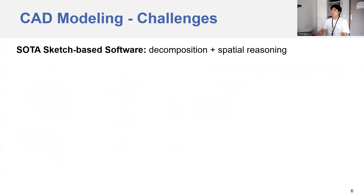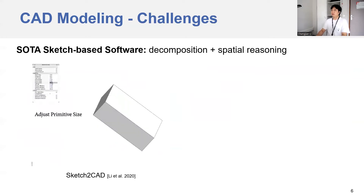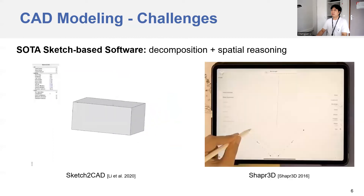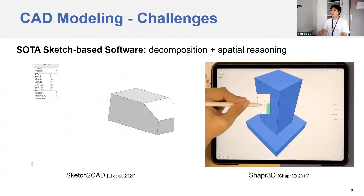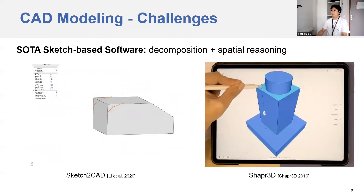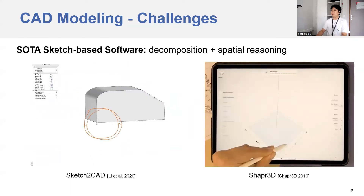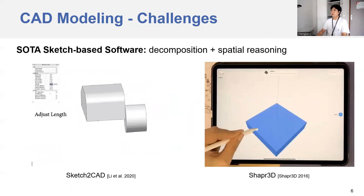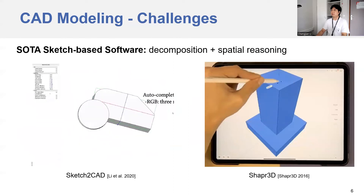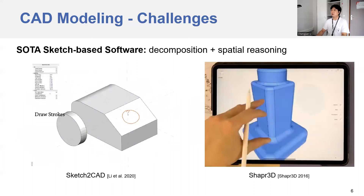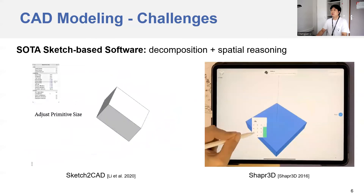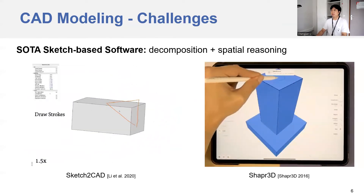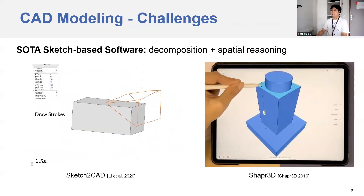Similar challenges are observed in state-of-the-art sketch-based modeling software. For example, in our previous Sketch2Cat or ShapeR3D, even though intuitive sketches are used, both methods create 3D shapes step-by-step. Thus, pre-decomposition and spatial reasoning — for example, translation and rotations — are required as well.